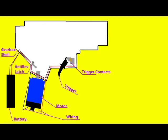Next is the anti-reversal latch. The anti-reversal latch is responsible for applying constant pressure to the bevel gear to prevent the gears from rotating backwards when the gun is fired.